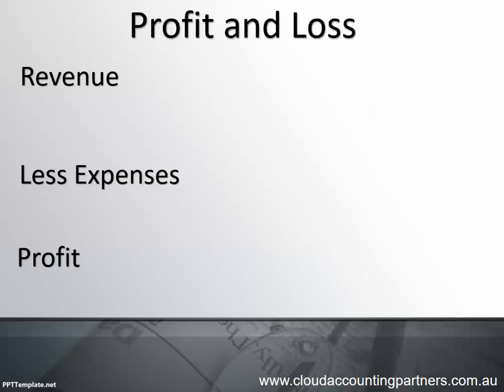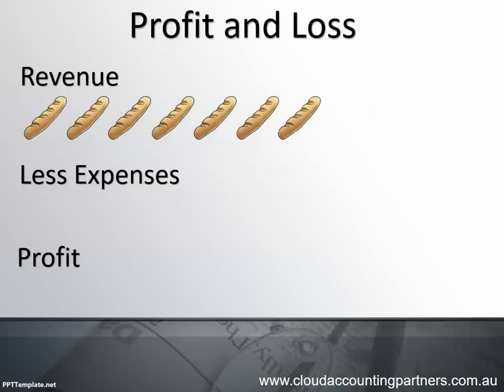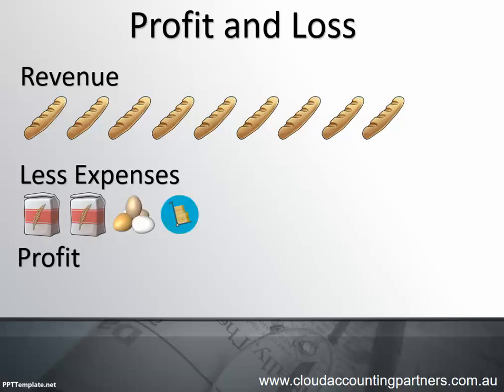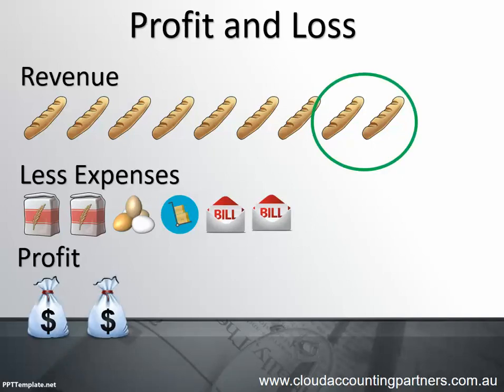The profit and loss report really has three parts. We start with the revenue — how much bread did we sell and what was the value of that? Less all the different expenses incurred throughout the particular period, the expenses incurred in the earning of that revenue. Then we look at whether the revenue was greater than the expenses. If there's more bread sold than expenses, then we should make a profit.